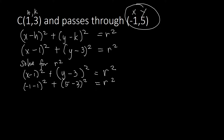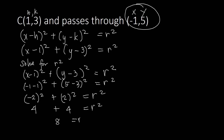So we have (-1 - 1)² + (5 - 3)² = r². That gives us (-2)² + (2)² = r², which is 4 + 4 = r², so r² = 8. Now we are ready to write our standard equation of the circle: (x - 1)² + (y - 3)² = 8.